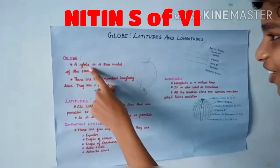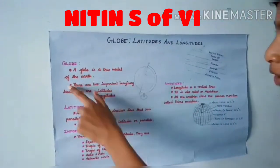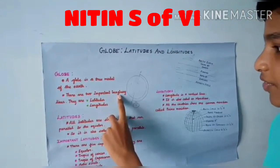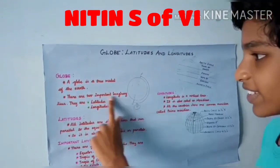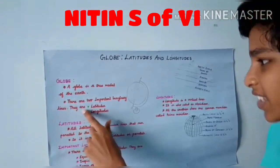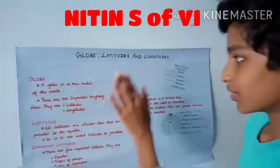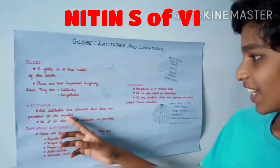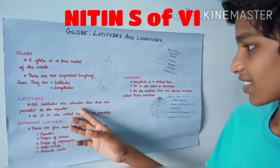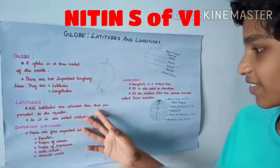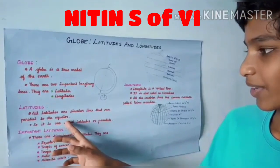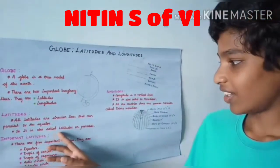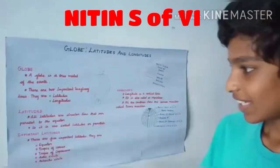Globes. A globe is a true model of Earth. There are two types of imaginary lines. They are latitude and longitude. All latitudes are circular lines that run parallel to the equator, so latitudes are called parallels.